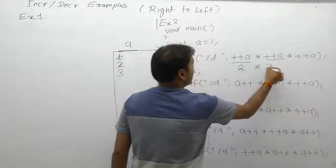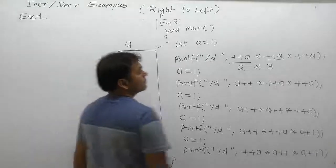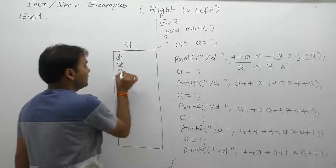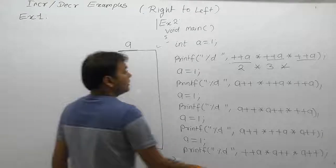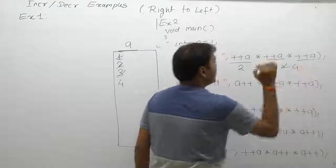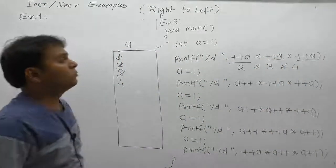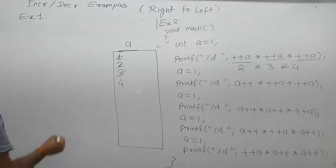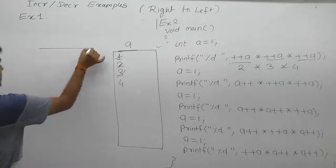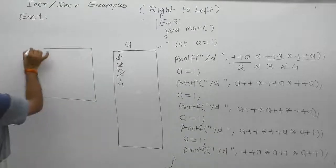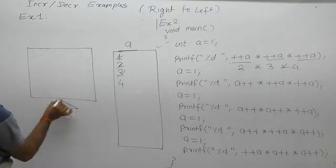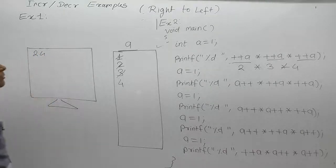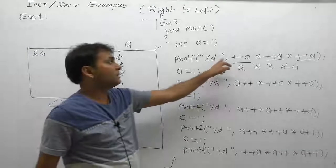Again pre-increment — now a becomes 4. Then replacement. The final result of that expression — 2 multiplied by 3 multiplied by 4 — what is 2 times 3 times 4? It is 24. So the first printf prints 24 on the output device monitor. Then a space is printed.